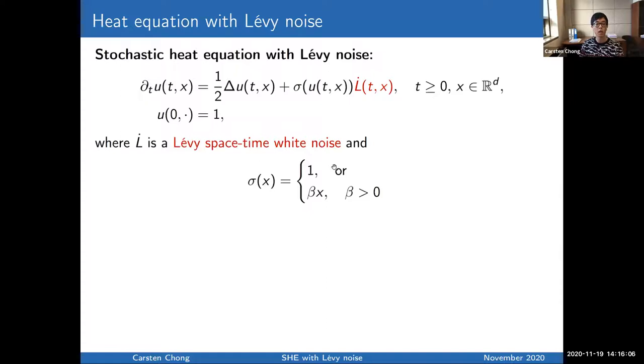So let me directly start with the equation that I would like to consider in this talk. What you see here is basically the heat equation D dimensions, with a nice initial condition. So for simplicity, I would just assume that it's one. And we also have a noise on the right-hand side of the equation. The novelty here is that what we would like to put here is the Lévy space-time white noise. The only difference here is that we no longer assume that the noise is Gaussian. In front of noise, we also have a coefficient. And for simplicity, I will assume that this coefficient is always either one. So that's the case of additive noise, or that it's a linear function. In that case, people refer to it as either the case of multiplicative noise or the parabolic Anderson model.